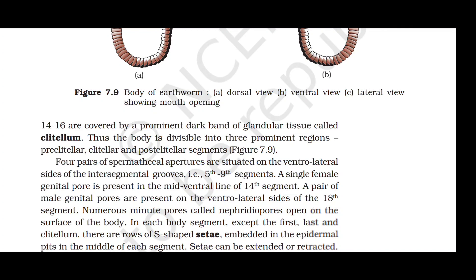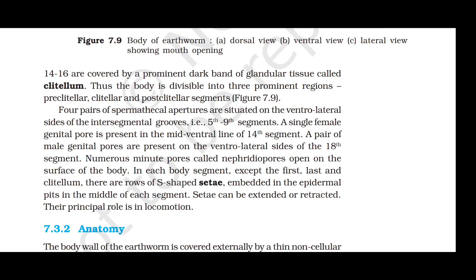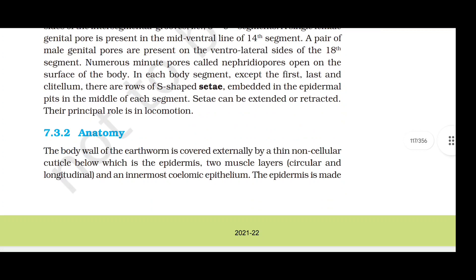The body is divisible into three regions: preclitellar, clitellar and postclitellar segments. Four pairs of spermathecal apertures are situated on the ventro-lateral sides of intersegmental grooves between segments 5 to 9. A single female genital pore is present on the mid-ventral line of the 14th segment and a pair of male genital pores on the ventro-lateral sides of the 18th segment. Numerous nephridiopores open on the body surface. Each segment has rows of S-shaped setae embedded in epidermal pits, which help in locomotion.